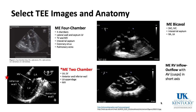Some select TEE images and anatomy: the midesophageal four-chamber view shows the four chambers — left atrium, right atrium, right ventricle, and left ventricle. This is good to look at the tricuspid and mitral valves, the lateral wall and septum of the left ventricle, and the interatrial septum — where a PFO could be viewed. The coronary sinus is visible when modified slightly, pulmonary veins entering the left atrium can be seen, and the midesophageal bicaval view shows superior vena cava, inferior vena cava, and the interatrial septum where a patent foramen ovale would be identified.